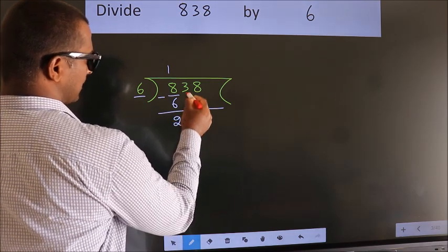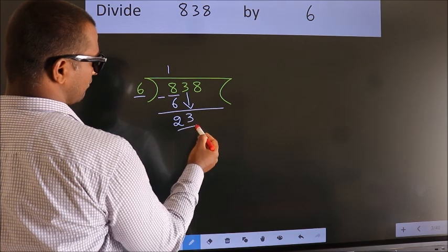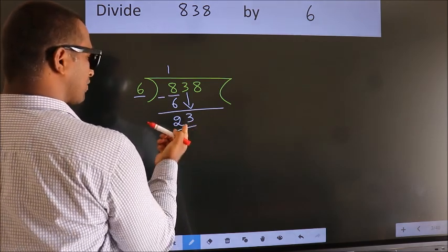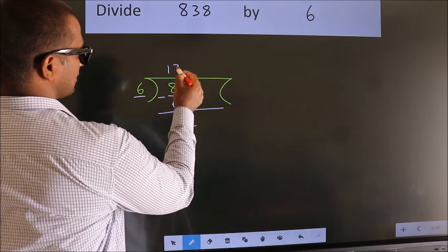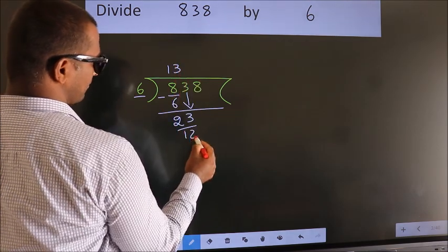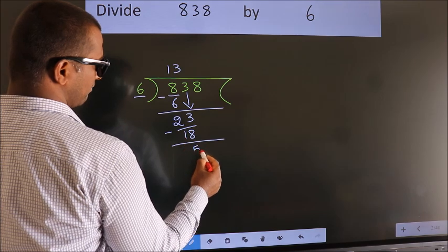After this, bring down the beside number. So, 3 down. So, 23. A number close to 23 in 6 table is 6 threes, 18. Now, we subtract. We get 5.